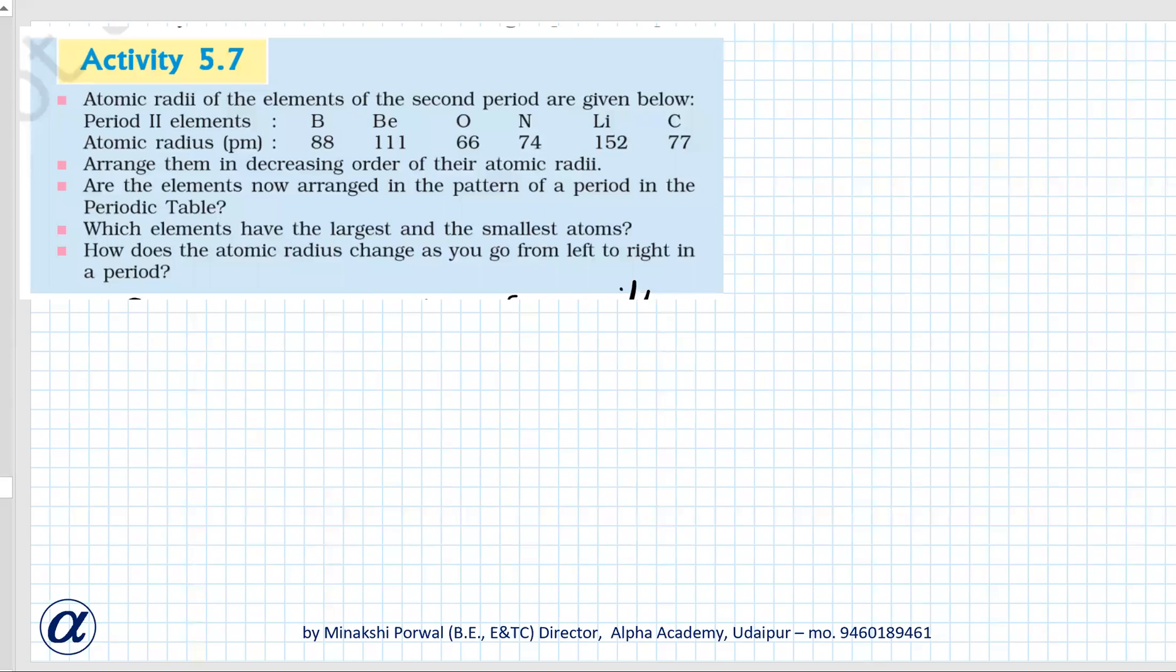Next is Activity 5.7. Atomic radii of elements of the second period are given below - boron, beryllium, oxygen, nitrogen, lithium, and carbon. Their atomic radius in picometers is given. Arrange them in decreasing order of their atomic radii.